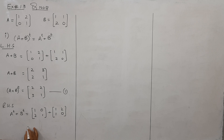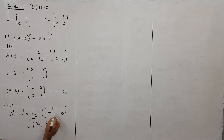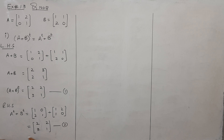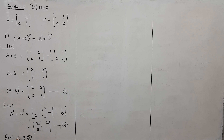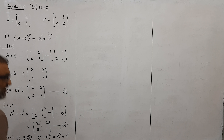اب simply add up کرنا ہے: 2 آگیا، 2 آگیا، 3 اور 1 آگیا۔ آپ دیکھیں equation 1 اور 2 سے ہم کہہ سکتے ہیں — from equations 1 and 2 — کہ وہ جو statement prove ہونی تھی: (A+B)^T = A^T + B^T، یہ verified ہو گیا ہے۔